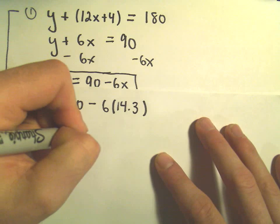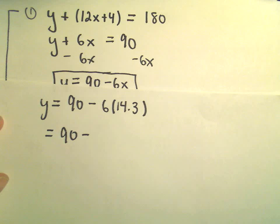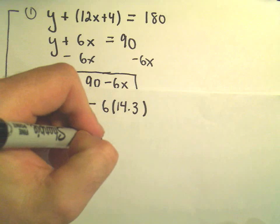Let's see, so 6 times 14.3, I'm getting 85.8.